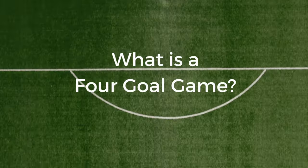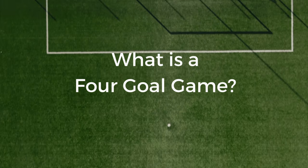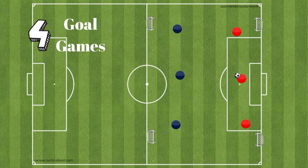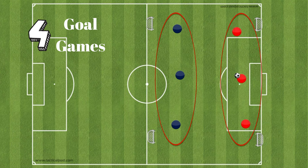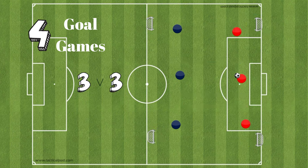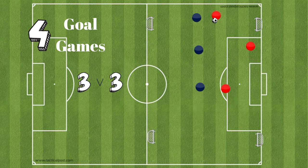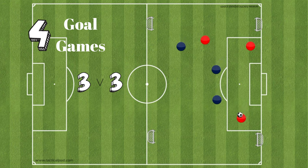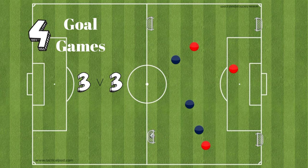Today we're talking about four goal games. At a basic level, a four goal game consists of two teams going directionally towards two of four goals that are spaced out wide. Here we have an example of a 3v3 four goal game. This is the starting four goal game, especially for youth players, and I would stick with this for quite a while before advancing because it will take some time for the younger players to get the concepts of this activity.